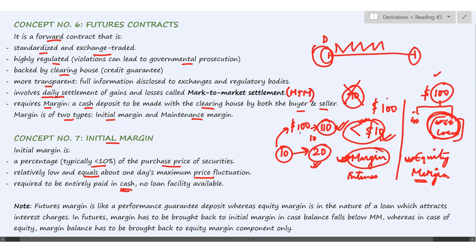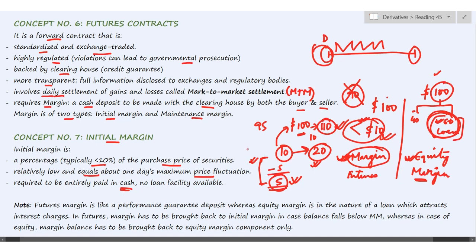If you incur a loss — say the $100 becomes $95 — your deposit amount will be reduced by $5 and your balance becomes only $5. You can either withdraw that amount or refill your margin account, which is called a margin call. To summarize: equity margin is a borrowing, while futures margin is simply a deposit. I hope that distinction is now clear.